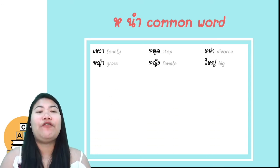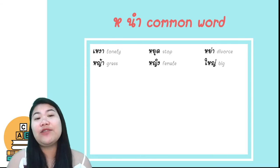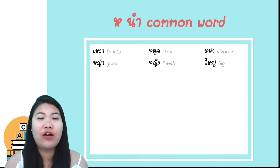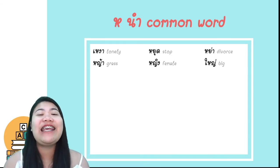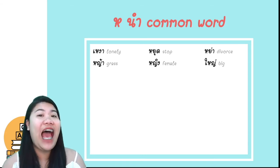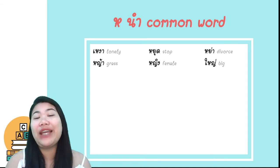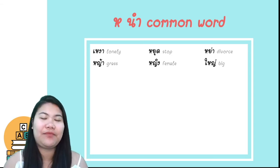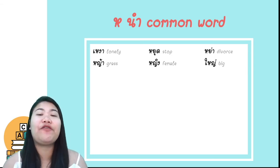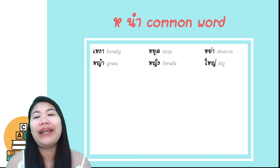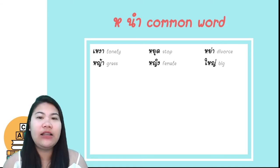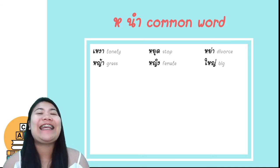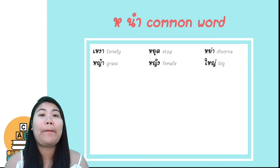For the word ยา, we use ho heep and tone mark 2, but we pronounce it as falling tone — ยา, ยา. Because we have ho heep, we follow the tone rule of high class. Next: หญิง, which means female, and ใหญ่, which means big.